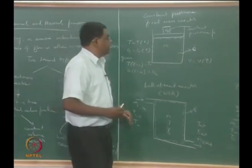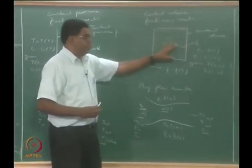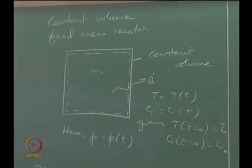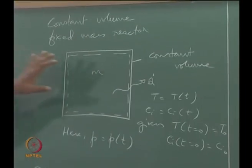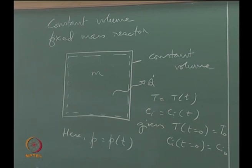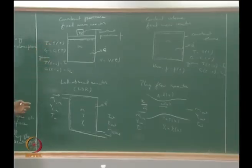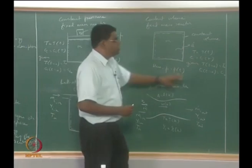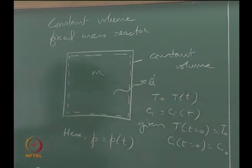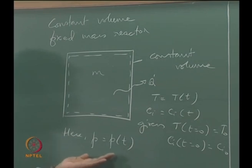In the constant volume fixed mass reactor, you have just a box — the piston cannot move to maintain constant pressure, so the volume is fixed and pressure will change in time. The problem is posed similarly as far as the ODE set is concerned, except we keep volume fixed rather than pressure, and as an offshoot we find how pressure changes in time.